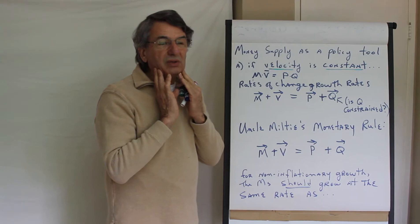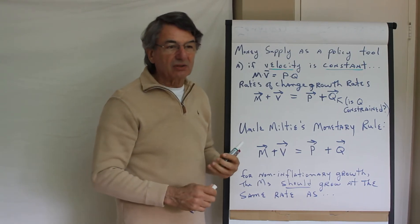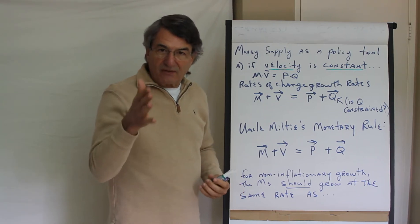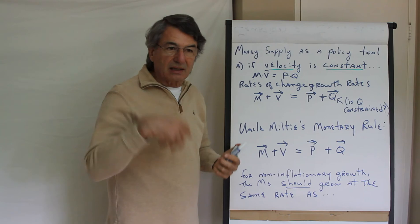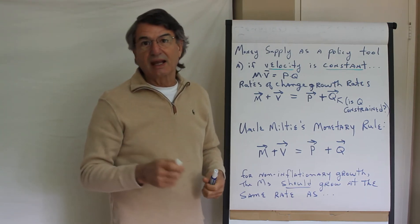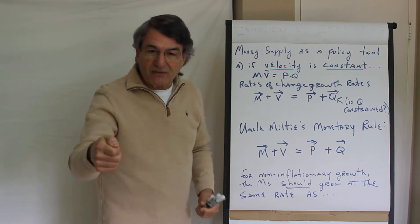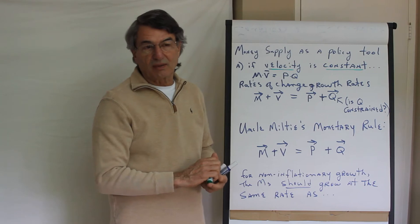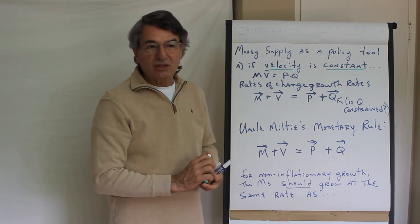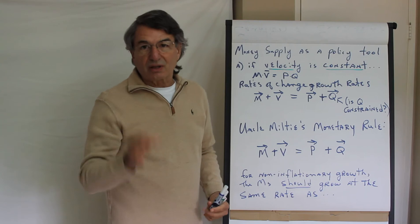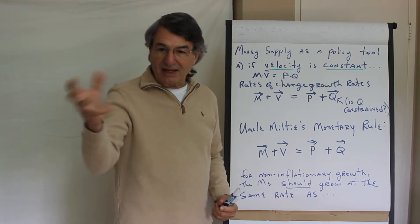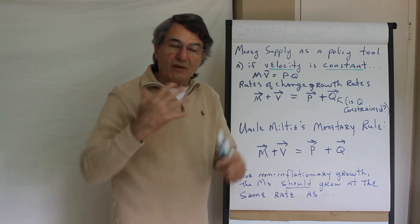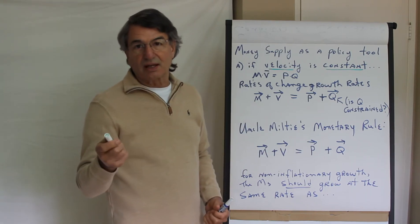If people want to hold less money, for instance during the Weimar Republic in Germany during the horrific hyperinflation, wives would come to the factory gates to collect the money. Workers would be paid two or three times a day and wives would come to the factory gates, take the money, and then go spend it immediately before it lost its value because of the hyperinflation. In that situation, money demand was zero or as close to zero as they could get. Anytime they got money they immediately spent it, and because it went from hand to hand so rapidly, the velocity of circulation was enormous.